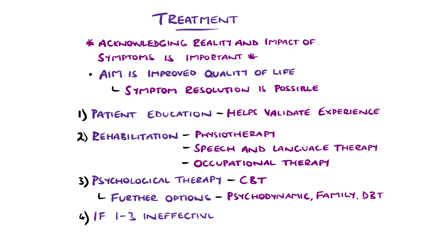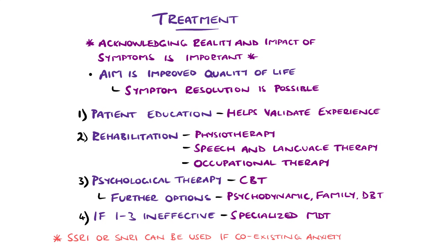In those with ongoing problem symptoms despite steps 1 through 3, or a high level of disability, specialised multidisciplinary team therapy can be delivered. For those with comorbid anxiety or depression, the management is similar to the above steps; however, pharmacological therapy is added, such as a selective serotonin reuptake inhibitor or a serotonin and noradrenaline reuptake inhibitor.